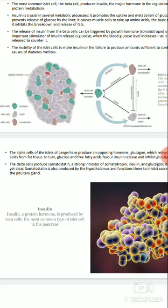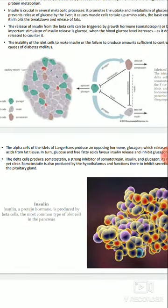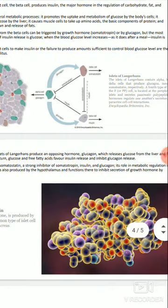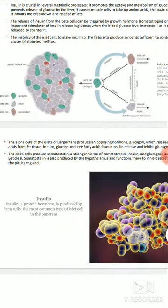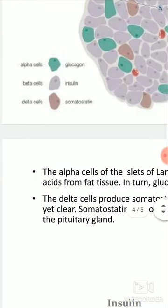The inability of the islet cells to make insulin, or the failure to produce amounts sufficient to control blood glucose level, is the cause of diabetes mellitus. Islet cells की अक्षमता insulin produce करने में, या cells का fail हो जाना, या उतने amount का insulin produce न कर पाना जो blood glucose level को control कर सके — उसका नतीजा होता है diabetes mellitus.